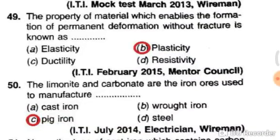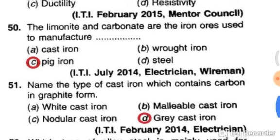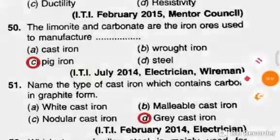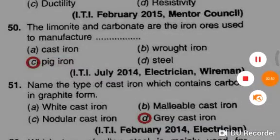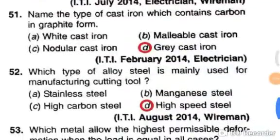Limonite and carbonite are the iron ores used to manufacture pig iron. Name the type of cast iron which contains carbon in graphite form — grey cast iron. Which type of alloy is mainly used for manufacturing cutting tools? High speed tool steel.